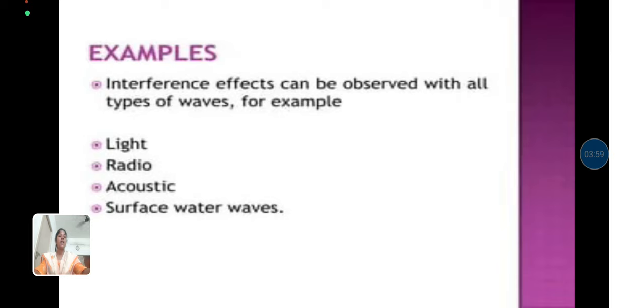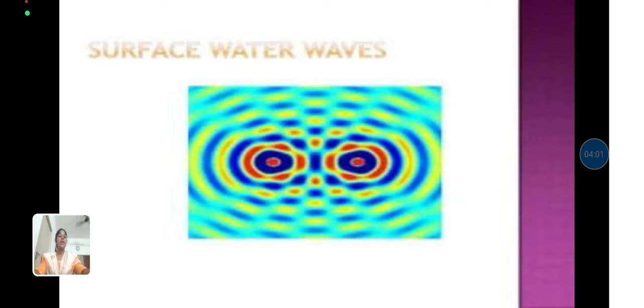In this slide, we see the surface water waves that occur, surface water waves due to the occurrence of the interference fringes.